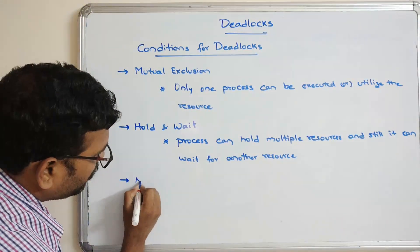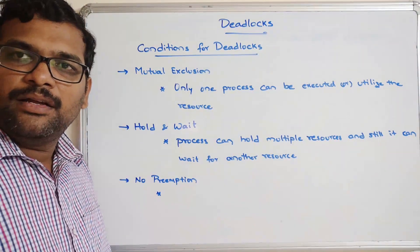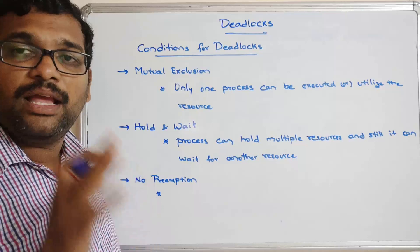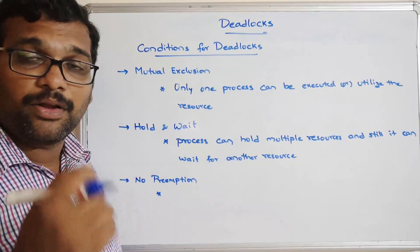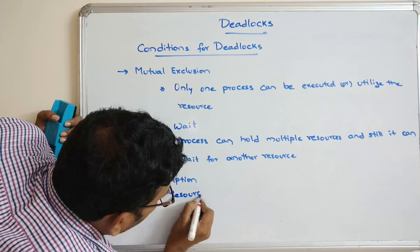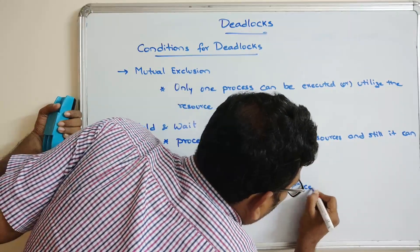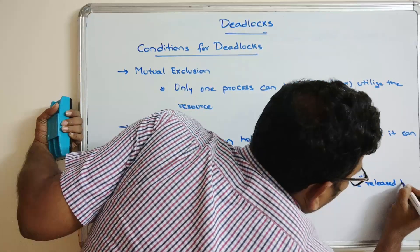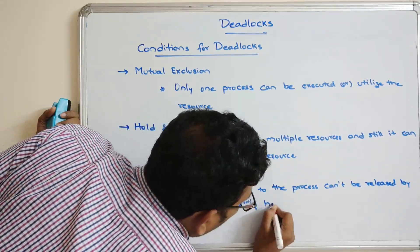The third condition is no preemption — no interruption. The process has to release resources only after completion of its execution. The operating system or user cannot forcibly release the resources from the process. The resources allocated to the process can only be released by the process itself.